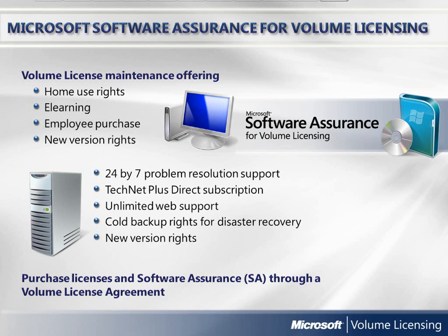There are qualifying rules for software assurance benefits — for more information, ask your reseller. You can choose software assurance at the time of purchase and begin using your benefits immediately for use during your agreement term. Some OEM and retail software can add software assurance through a volume licensing program within 90 days of the license purchase. The software then acquires the volume licensing use rights of the volume licensing program the software assurance is purchased through.